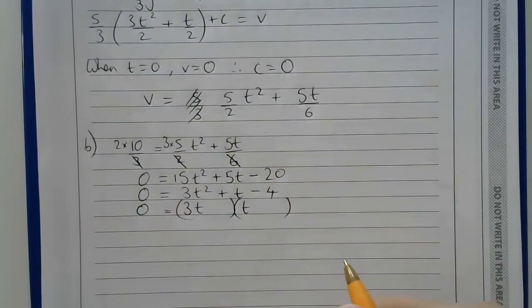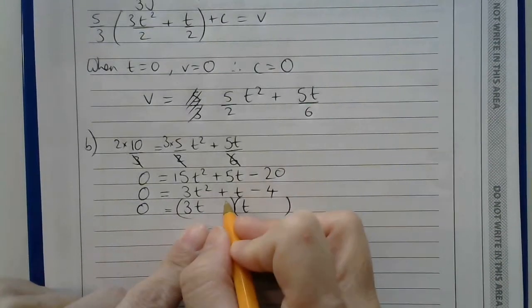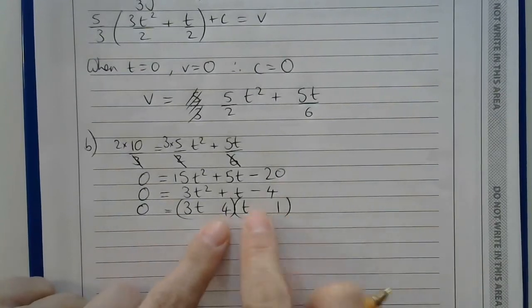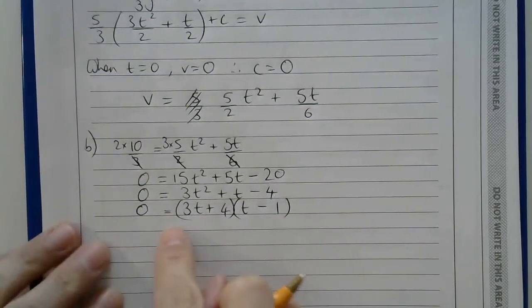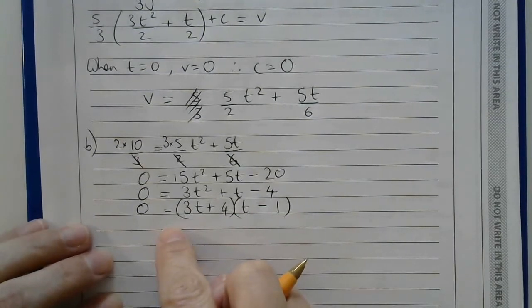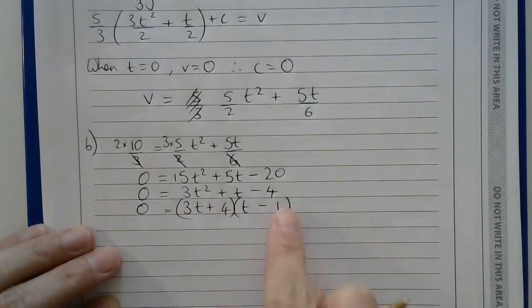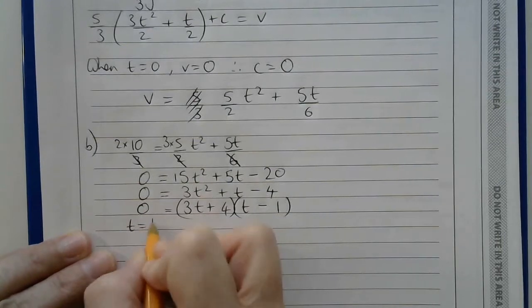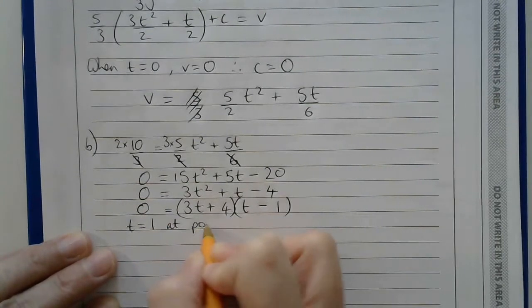And then, subtracting 20, I end up with 0 equals 15t squared plus 5t minus 20. And I can divide everything by 5. So I end up with 3t squared plus t minus 4. In order to try to solve this equation, then I can hopefully factorize. Let's try 3t and t. There aren't too many different possibilities to try. So I think it would be a 4 there and a 1 there. And I need the 4 to be positive and this to be negative. The only value at which the speed is 10/3, I can't have t as negative. So therefore, t is 1 at point A.